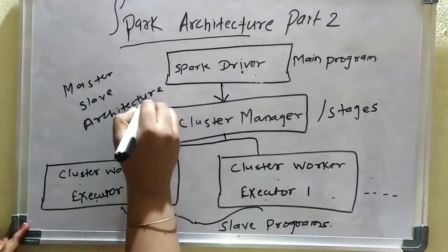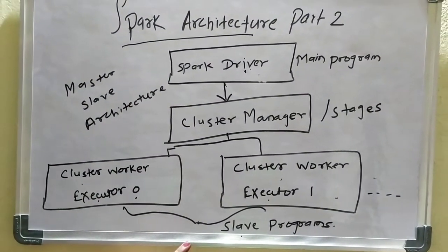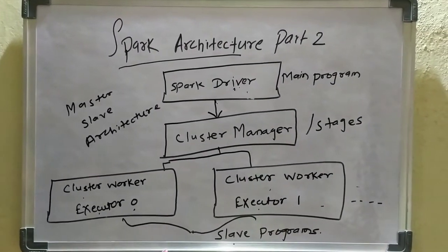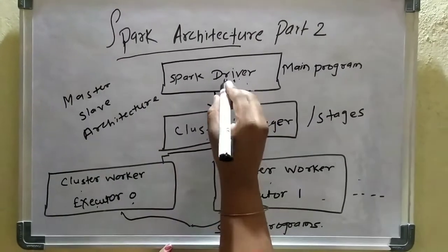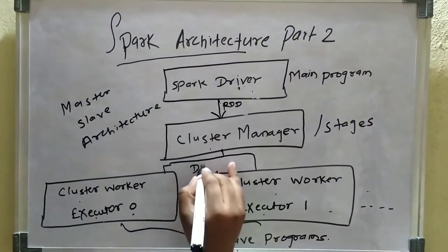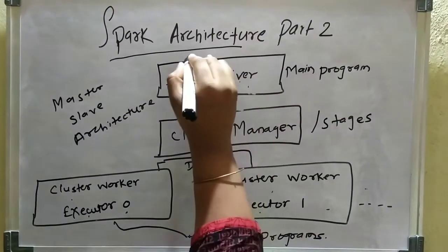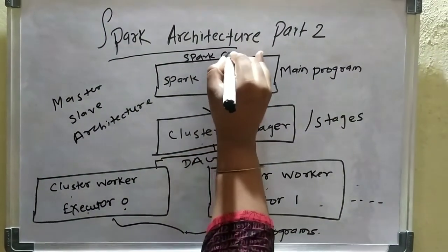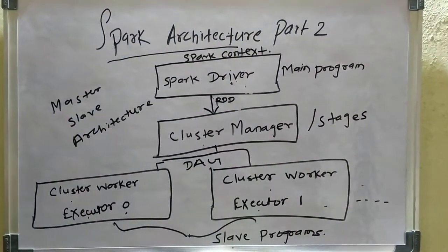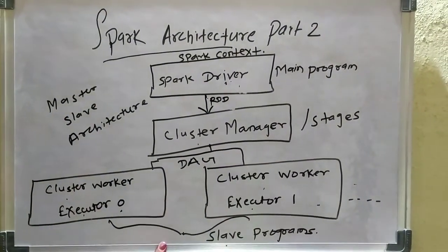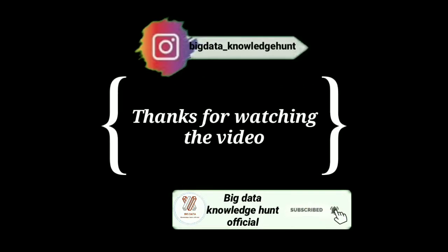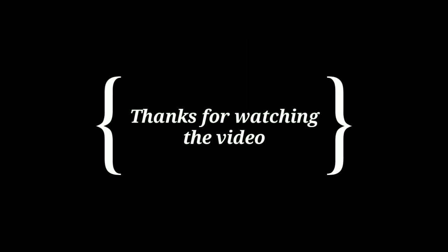This is the whole idea of Spark architecture. Whenever we deal with Spark, we have to consider two things: the RDD and the DAG. The cluster manager receives input from the Spark driver in the form of RDD, which contains the transformations. Above that, the Spark context is present — the Spark context is the main Spark program. Thank you for watching; don't forget to subscribe for more videos.